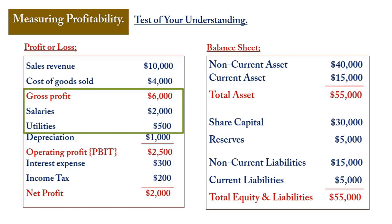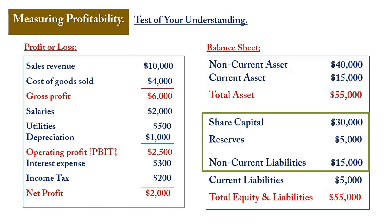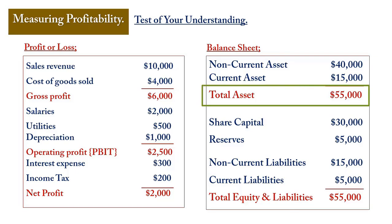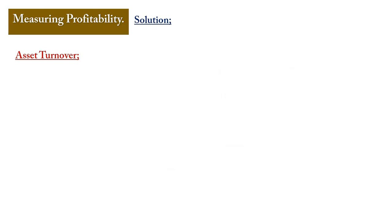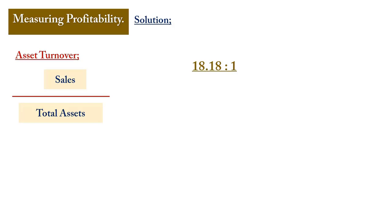The EBIT is £3,500 (PBIT of £2,500 added back the £1,000 depreciation), divided by capital employed of £50,000 — which is share capital plus reserves plus non-current liabilities, or alternatively total assets of £55,000 less current liabilities of £5,000 — giving a ROCE of 7%. For asset turnover, total sales divided by total assets produces 18.18 to 1, meaning every £1 of assets invested generated £18.18 in sales.